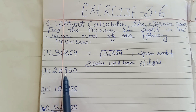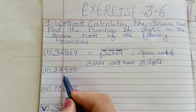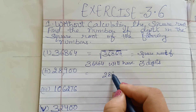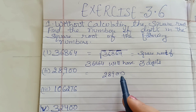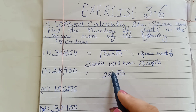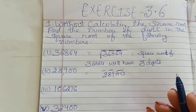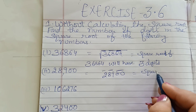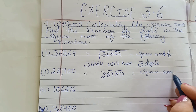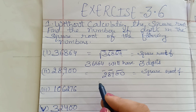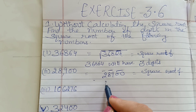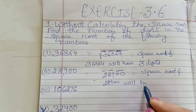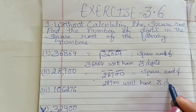Now next: 28900 — twenty-eight thousand nine hundred. Let's check how many bars it will have. From the right side: one, two, and three. Isme bhi three bars aayenge. So the square root of 28900 will have three digits.